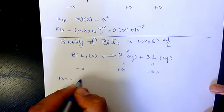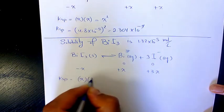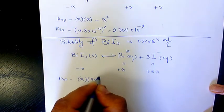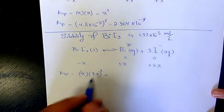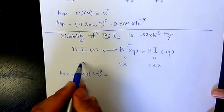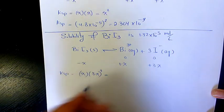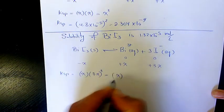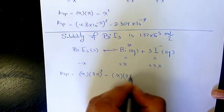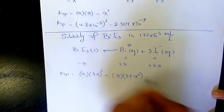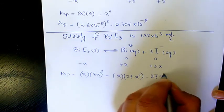So Ksp will be X times 3X to the power of 3. You cannot divide by this change because this is in solid form, so you don't write it. It's gonna be X times 3X to the power of 3, which is 27X cubed, which will be 27X to the power of 4.